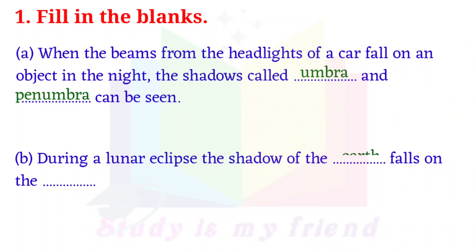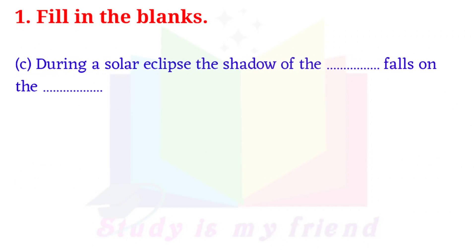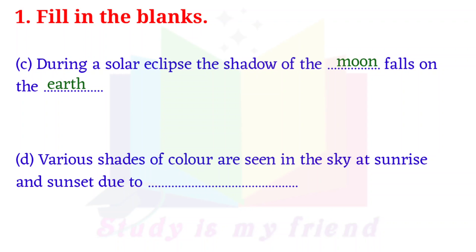B. During a lunar eclipse, the shadow of the earth falls on the moon. C. During a solar eclipse, the shadow of the moon falls on the earth. D. Various shades of color are seen in the sky at sunrise and sunset due to scattering of light.